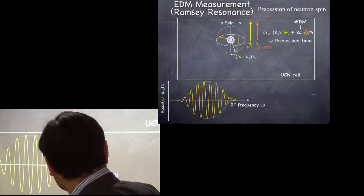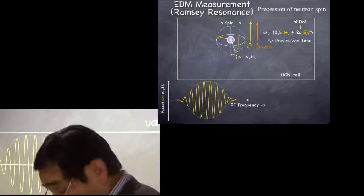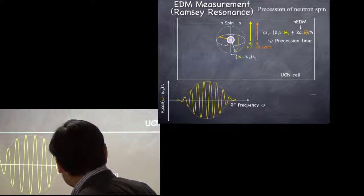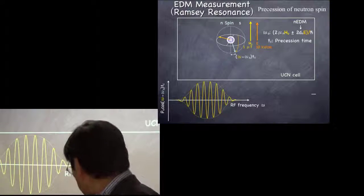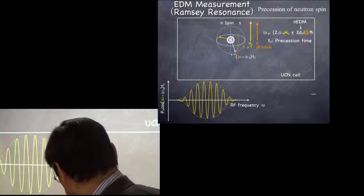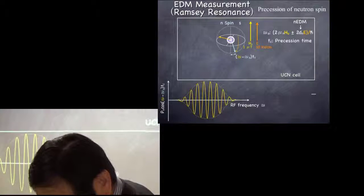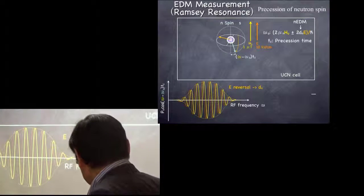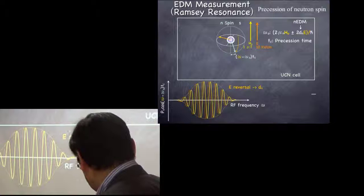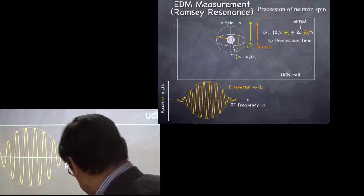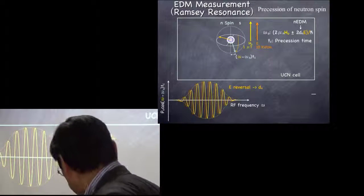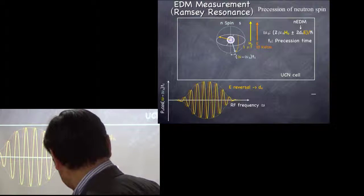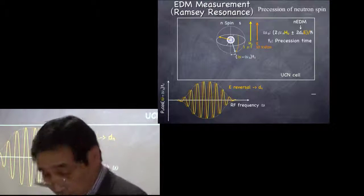Then the neutron spin, the neutron polarization is reversed. And depending on the phase difference between the precession and RF pulse, we can have this kind of fringing, Ramsey fringing spectrum. And if we reverse the electric magnetic field, if the pattern is shifted, that's evidence of the existence of the EDM.